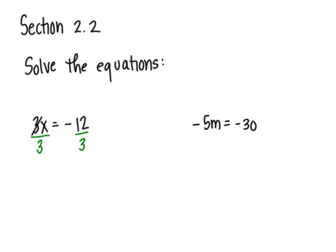So 3 divided by 3 would divide out and leave you with 1x. So we could just write x there, and negative 12 divided by 3 would leave me with negative 4. So x equals negative 4 would be my answer.